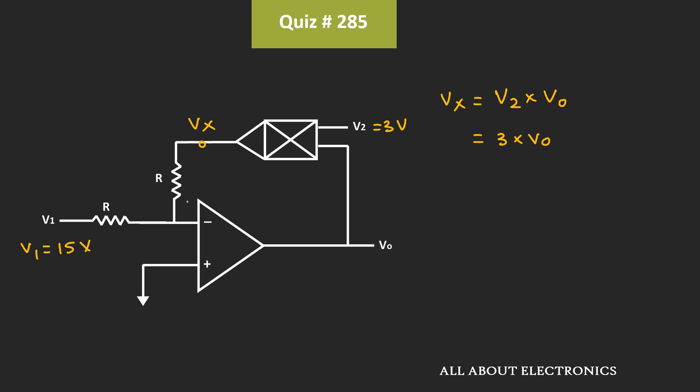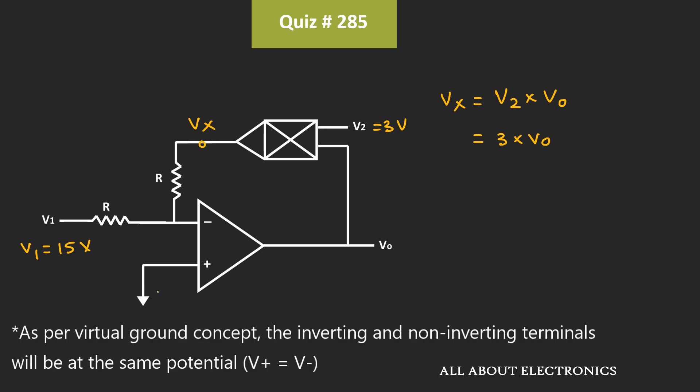Now since the op-amp is an ideal op-amp, we can assume that no current is going into the op-amp terminals. And since the non-inverting terminal is connected to the ground terminal, we can apply the concept of virtual ground.